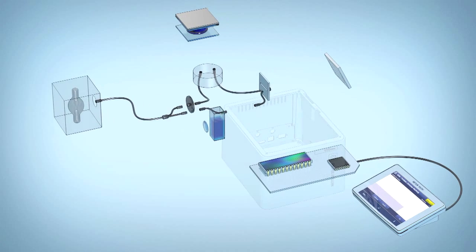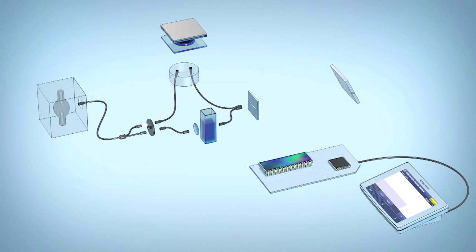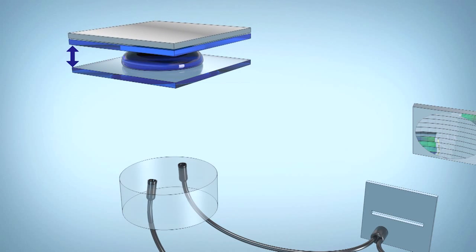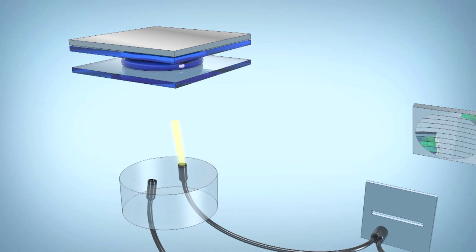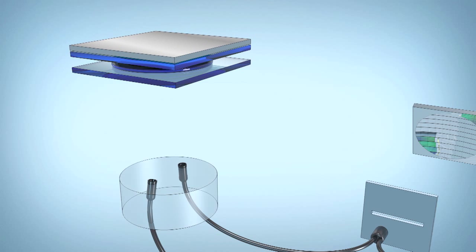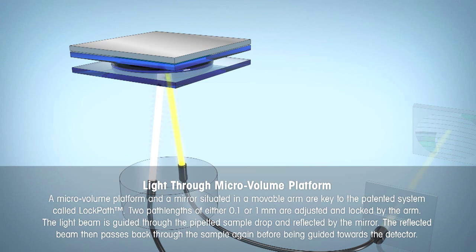The light beam is guided by a fiber to the microvolume platform. It passes through the optical cell and sample drop, is then reflected by a mirror, and then passes back through the sample before it is guided by another glass fiber towards the spectrograph.